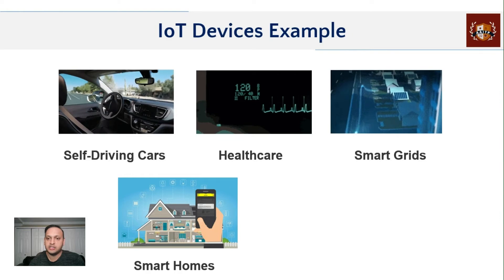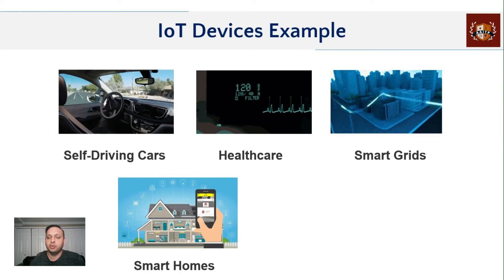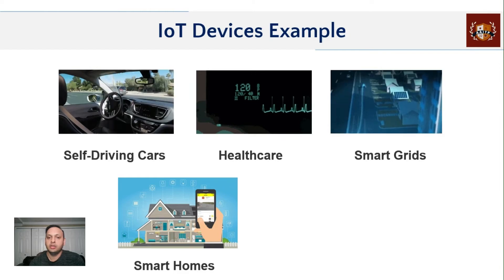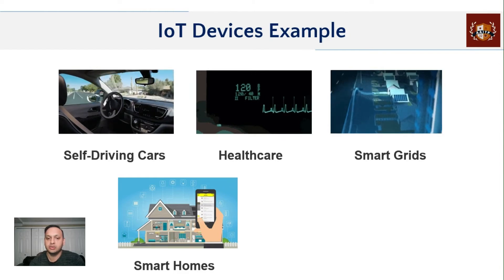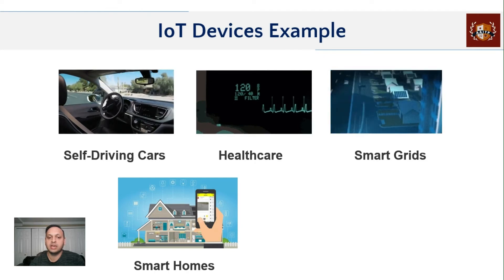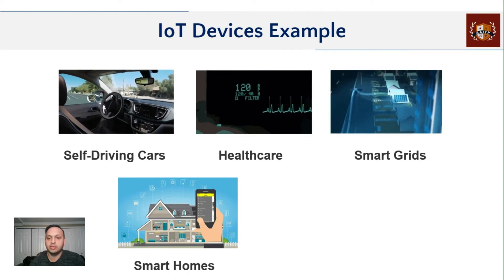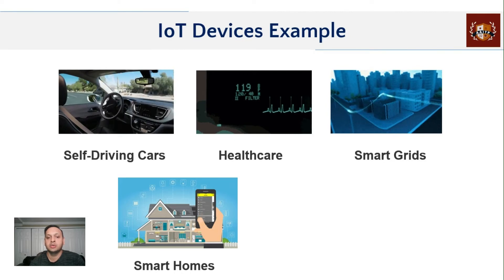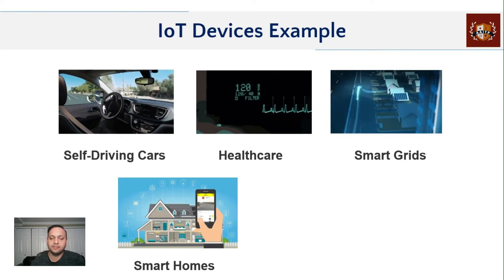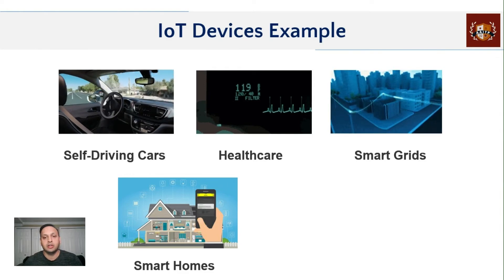These days you have smart plugs where you can view from your phone whether lights are on or off. You have smart cameras you can view live feed from your phone, and if the garage is open you can control that from your phone even if you're not in the perimeter. These are some smart home IoT devices that have been introduced a lot.